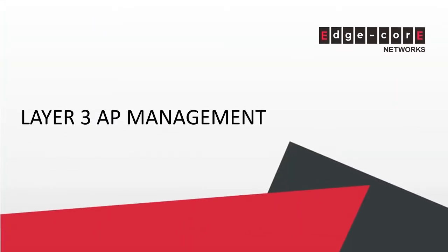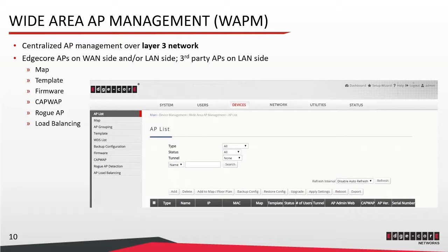Moving on, we're going to cover how remote AP management works in more detail. We have a feature on the controller called Wide Area AP Management, or WAPM. This feature is intended to be used for centralized AP management over layer 3 networks. In WAPM, you can have Edgecore APs on either the WAN and/or the LAN side of the controller, and third-party APs have to be on the LAN side of the controller. On this slide, you can see a screenshot of the AP list in WAPM. Besides AP list, you can see from the left column that map integration is supported, and you can configure settings like templates, CAPWAP-related settings, or perform firmware upgrades, and so on.